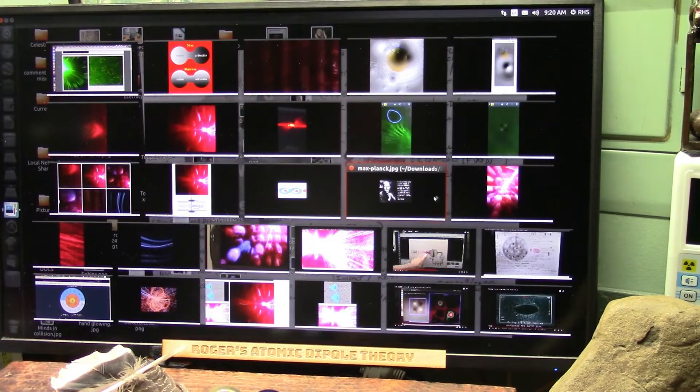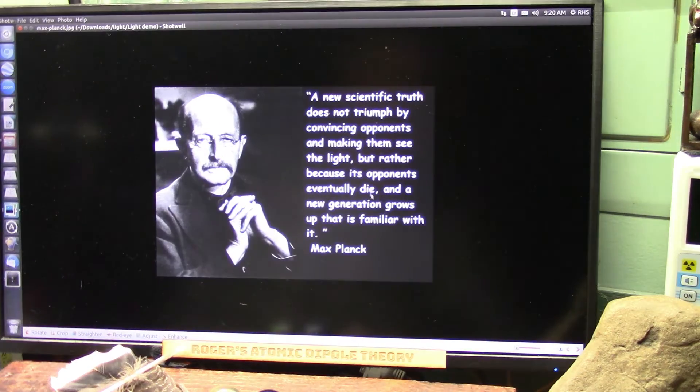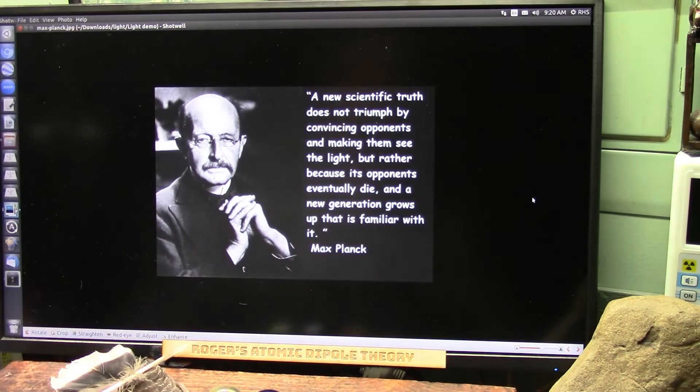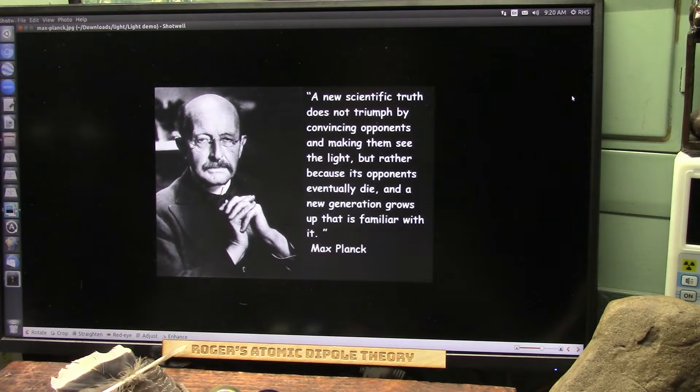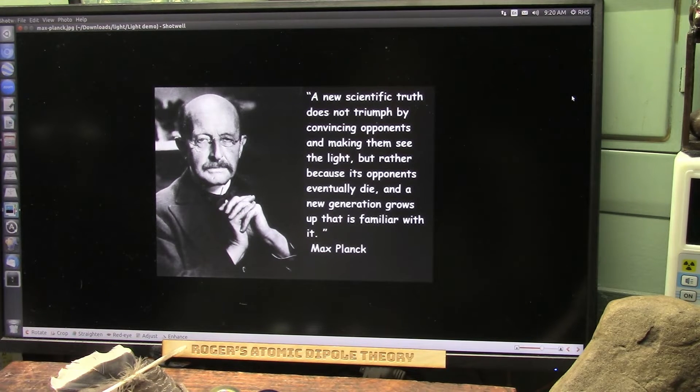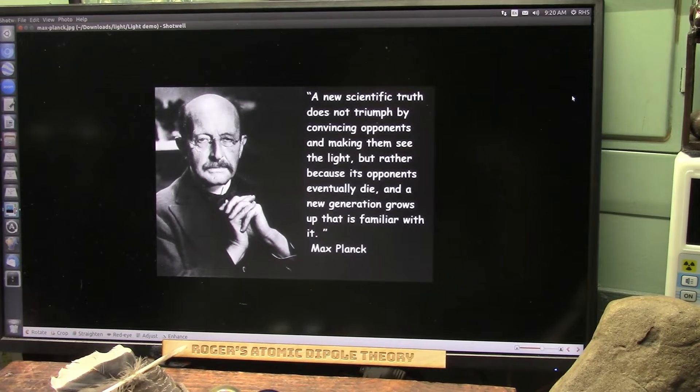And here's the real key. Here's the problem. A new scientific truth does not triumph by convincing opponents and making them see the light, but rather because its opponents eventually die off and a new generation grows up that is familiar with it, the truth. That's Max Planck.